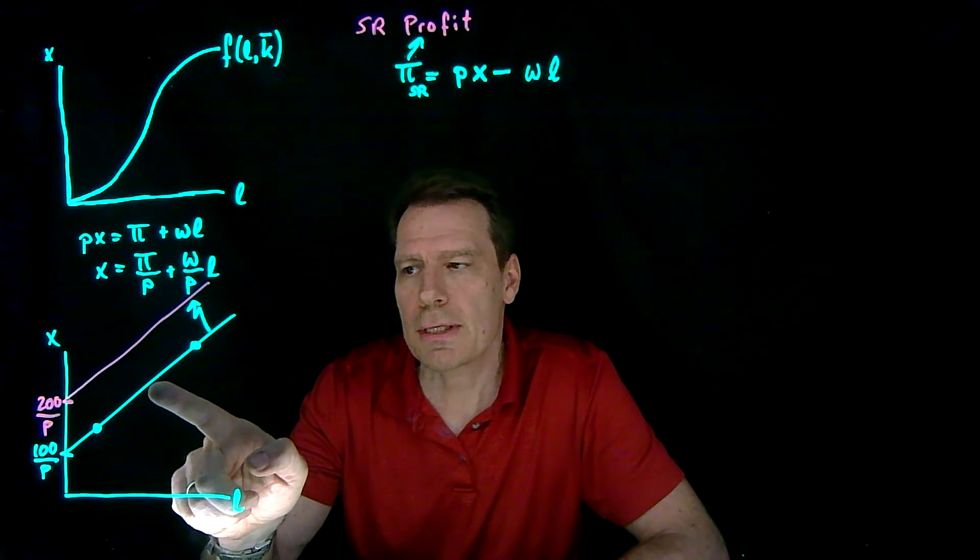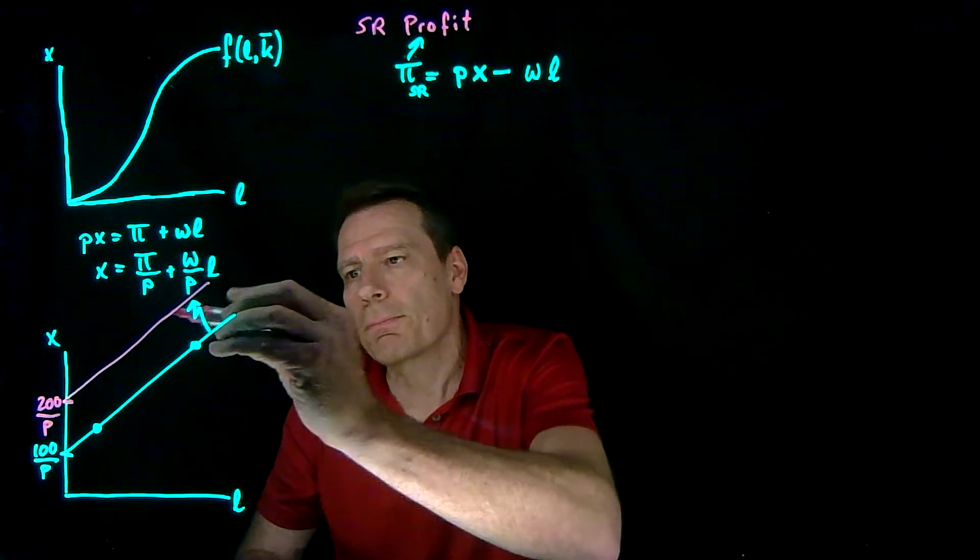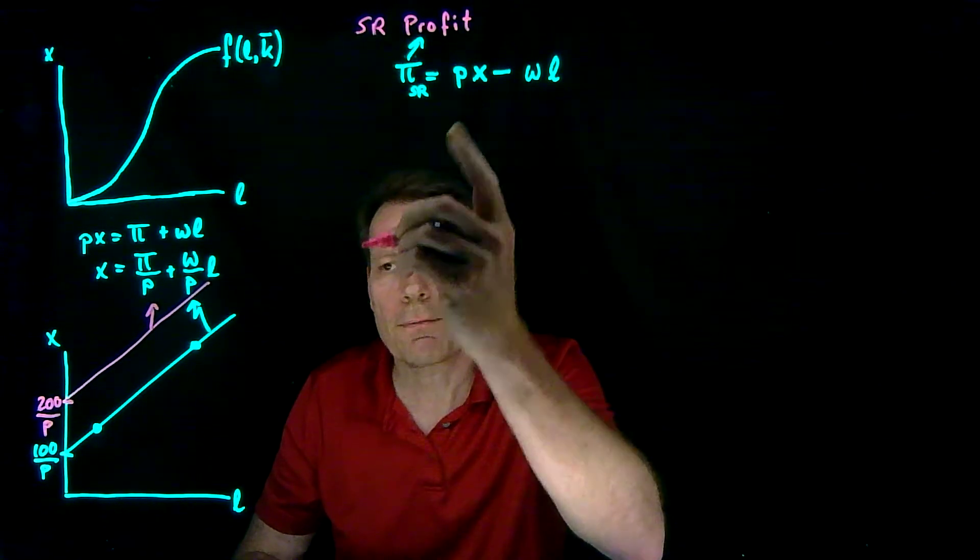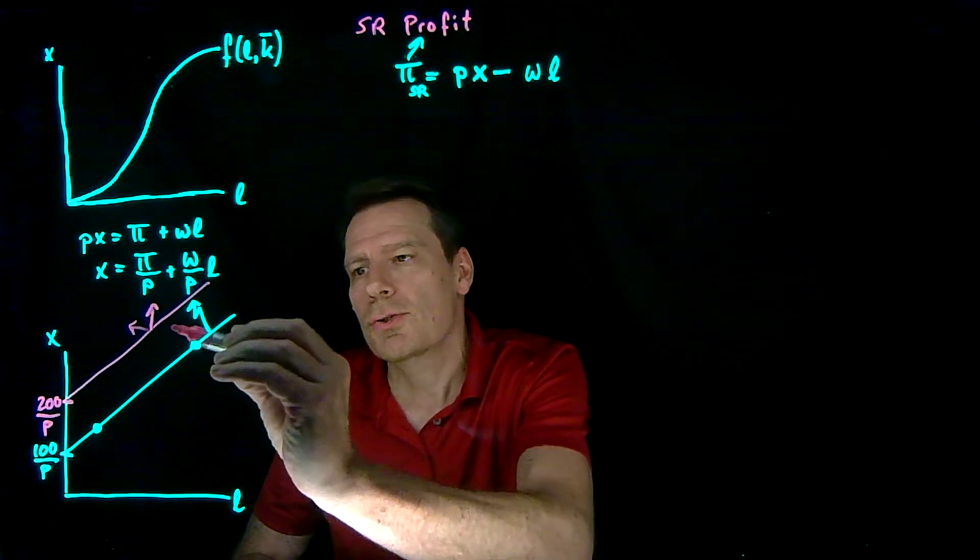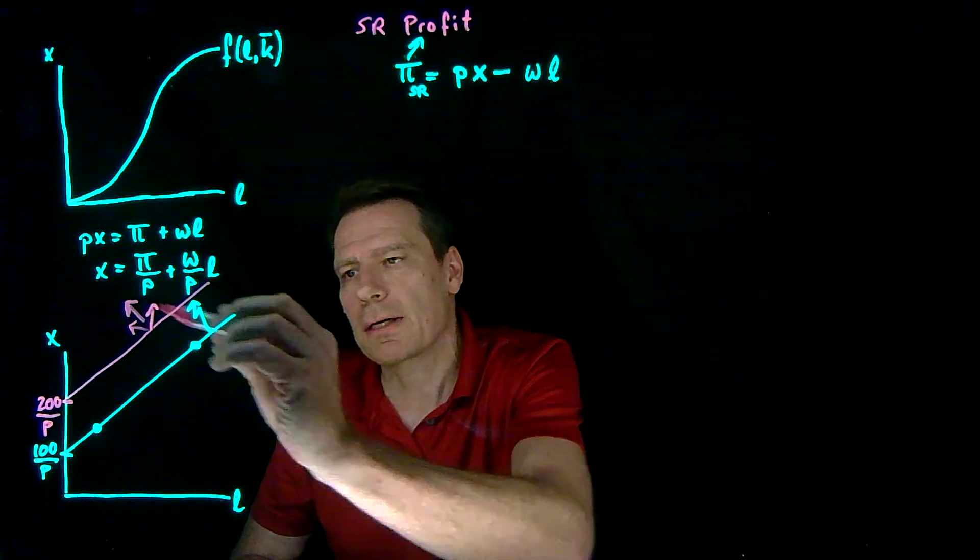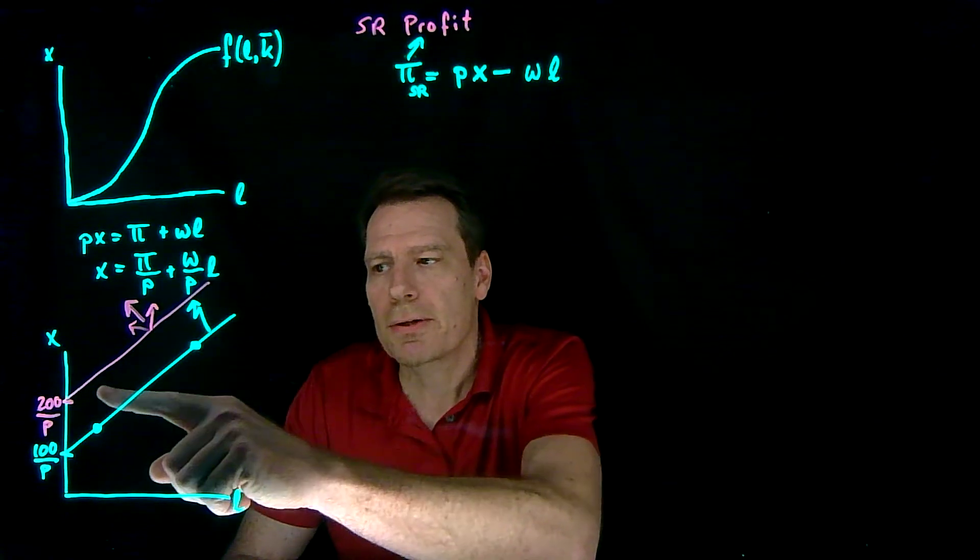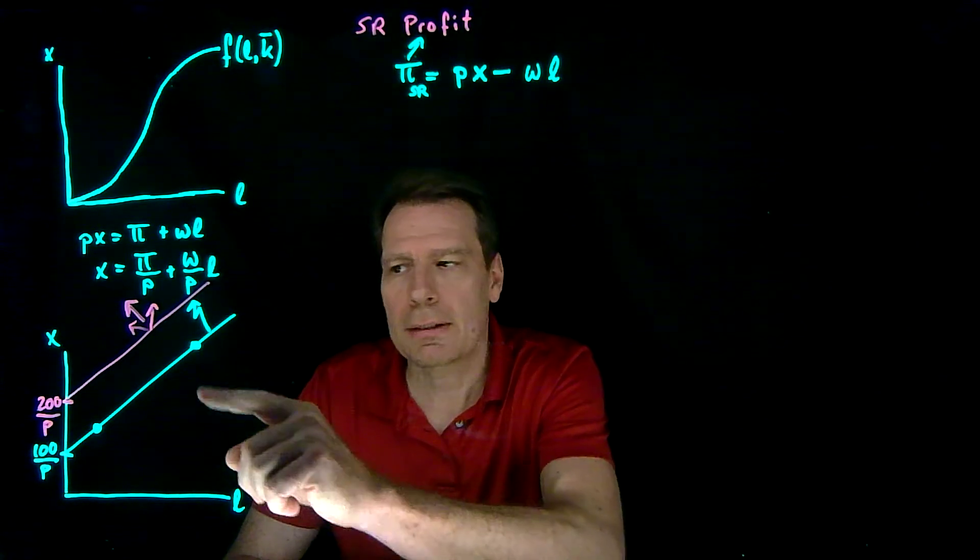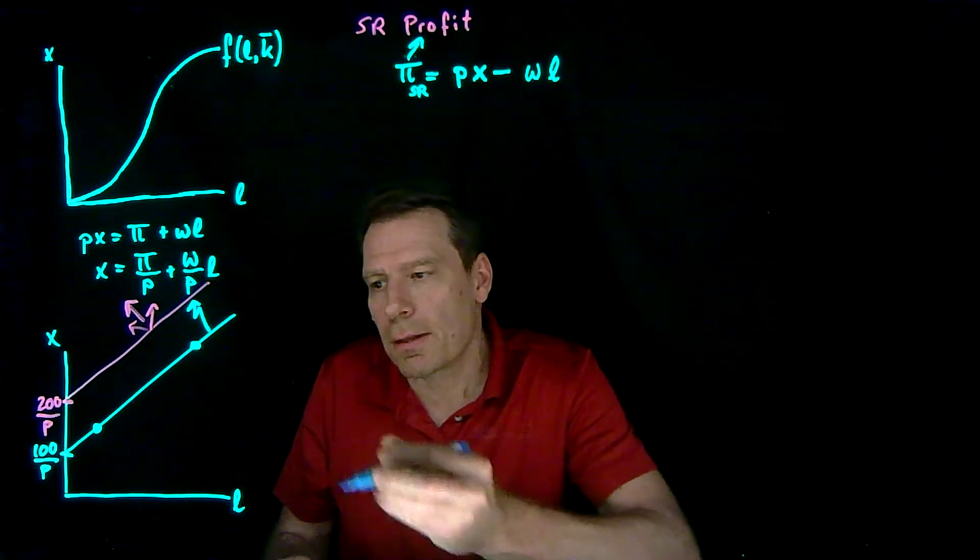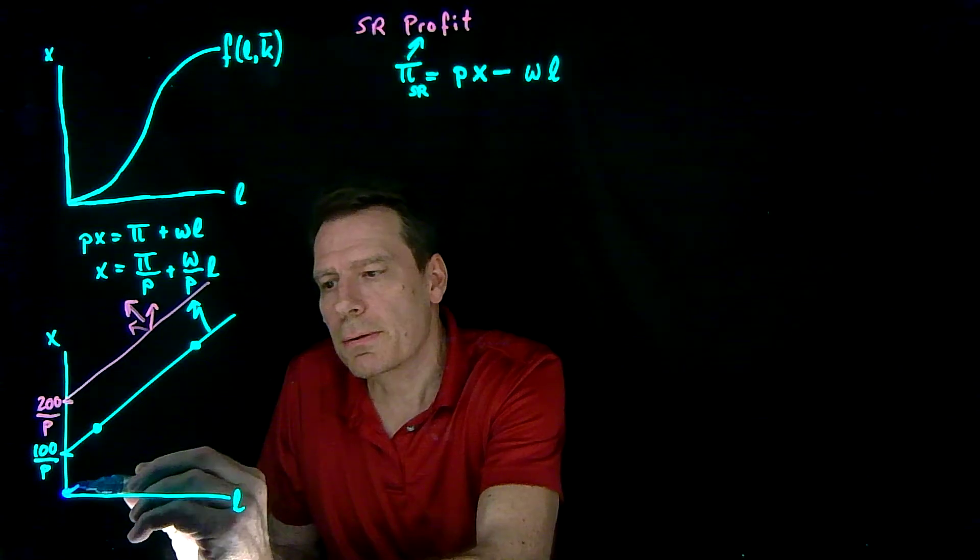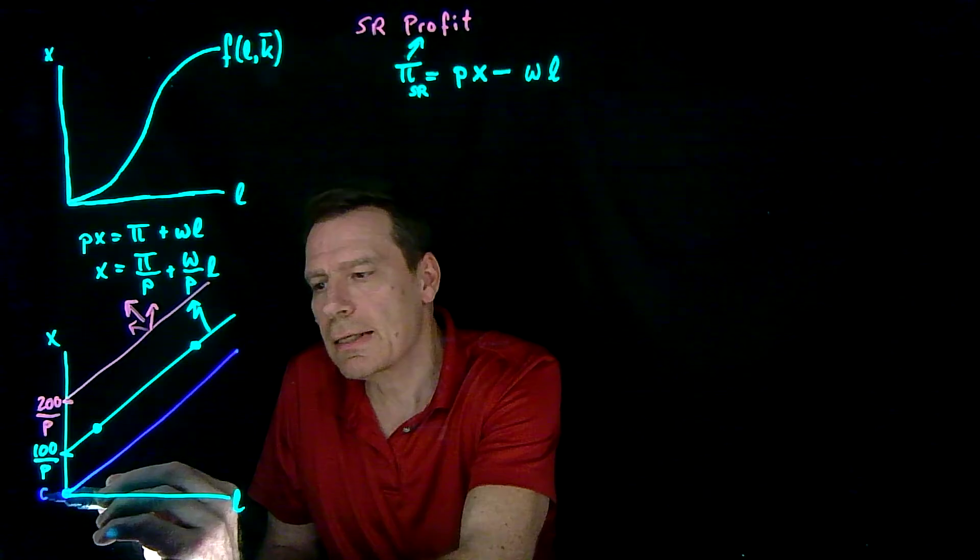And you can see that profit increases as we move to the northwest in this graph. As we produce more output, which creates revenues, with less labor, which reduces costs, we increase profit by moving in this northwest direction. But for every level of profit, there's a profit line that indicates all the production plans that would result in that much profit. There's a line, for example, that crosses this origin with the same slope. But it crosses at zero, so it would contain zero profit—all the combinations of labor and output that produce zero profit.